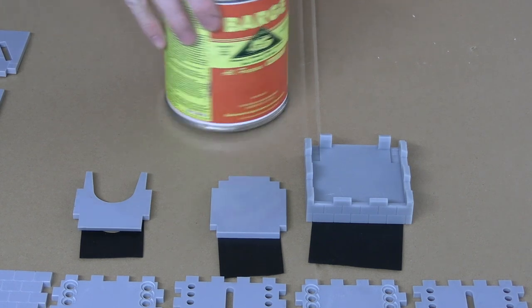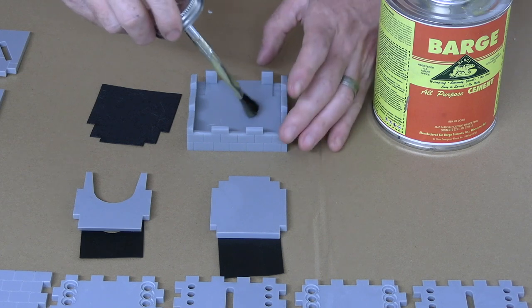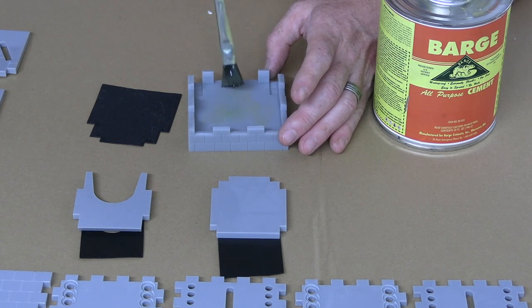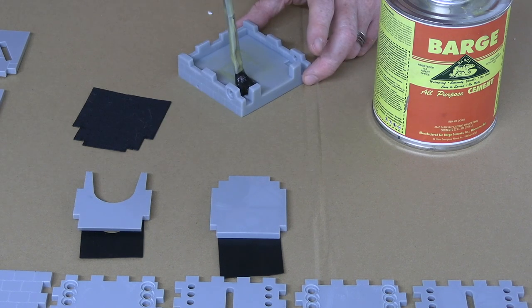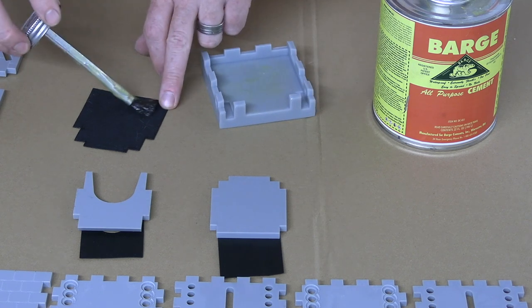Next, we'll be using contact cement to adhere the cloth pads to the dice landing surfaces. Starting with the dice tray, it's important that we get a nice even coat of contact cement all over the bottom without getting any on the sides. If you do get some on the sides, a little bit of alcohol and a paper towel will help clean this up.